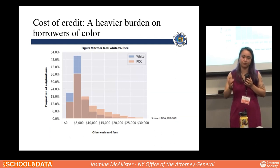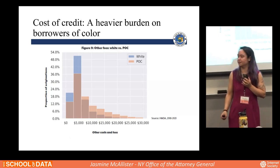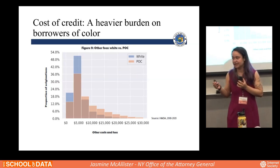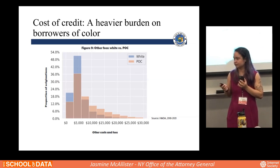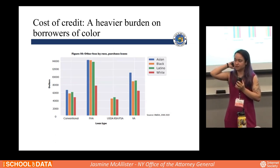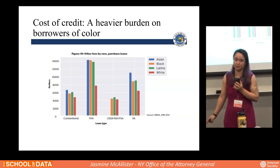We also looked at the cost of credit. Not only are people of color more likely to be denied, but when they are accepted, they pay more. This shows other costs and fees separate from interest. The blue bar shifted to the left is for white borrowers; the orange is for people of color. The blue is shifted left and orange is shifted right, indicating that people of color pay more in costs and fees even when approved. A chart separating loan type by race shows that white people are consistently paying less in costs and fees across all mortgage types.